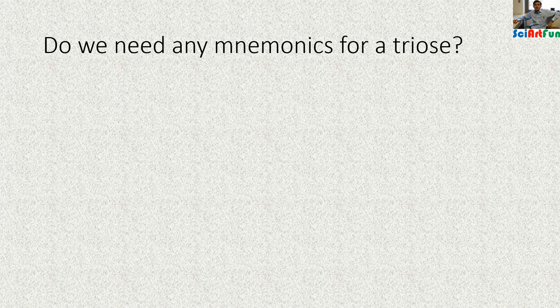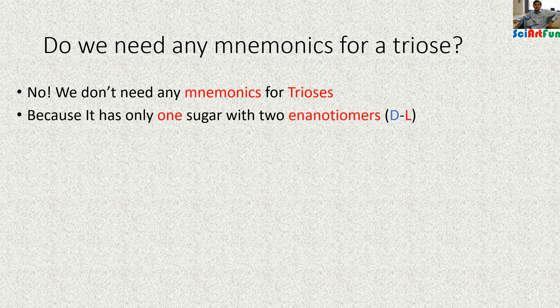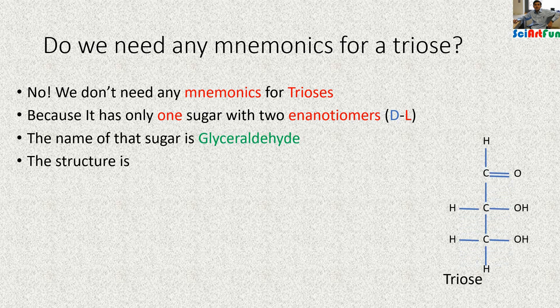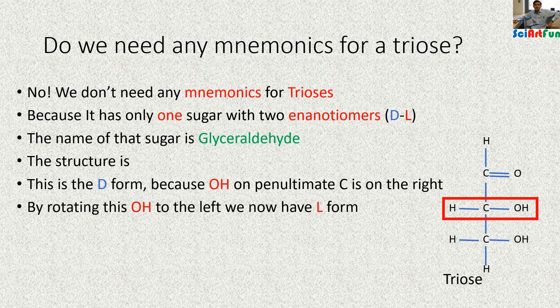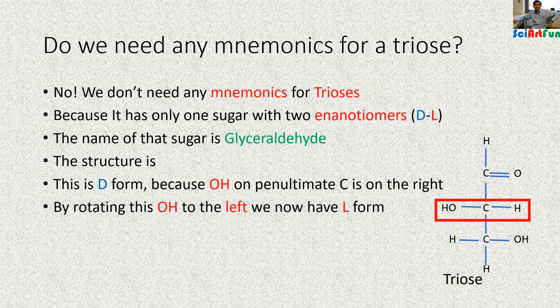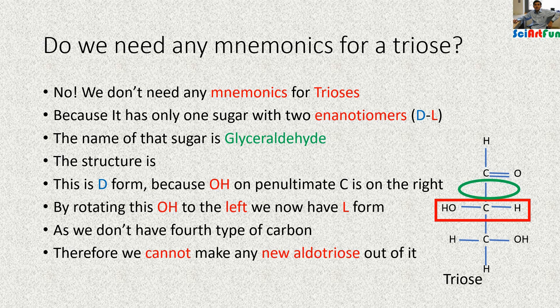Do we need any mnemonics for triose? No, we don't — because it has only one sugar with two enantiomers, D and L, named glyceraldehyde. In the D form, the OH on the penultimate carbon is on the right side. By rotating that hydroxyl group to the left side you get the L isomer. Since there is no fourth type of carbon in this sugar, we cannot make any new diastereomers from it.